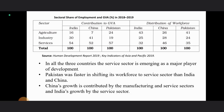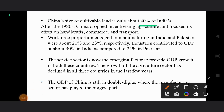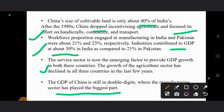China's cultivable land is only about 40 percent of India's. After the 1980s, China dropped incentives for agriculture and focused efforts on handicrafts, commerce, and transport. The workforce proportion engaged in manufacturing in India and Pakistan were about 21 and 23 percent respectively. The service sector is now the emerging factor driving GDP growth in both India and Pakistan, while the agriculture sector has declined in all three countries as they upgrade themselves toward the tertiary sector. China's manufacturing sector has played a significant role in its economy.